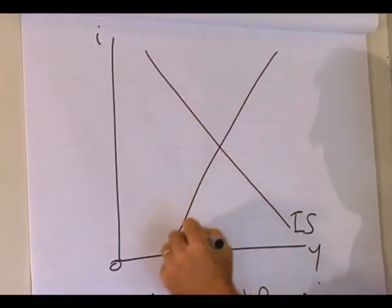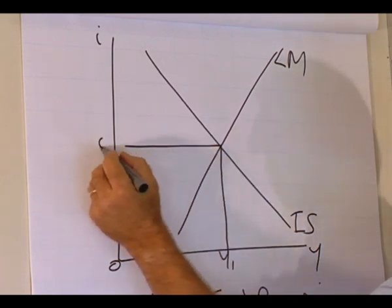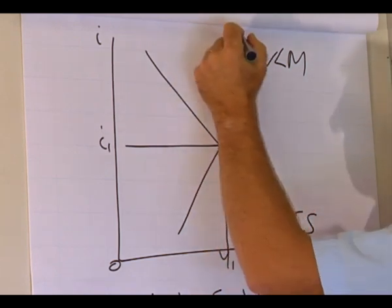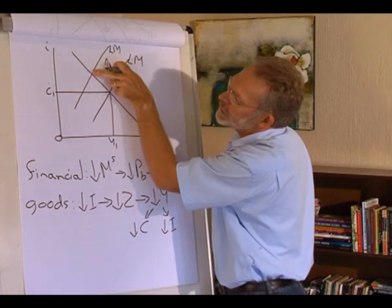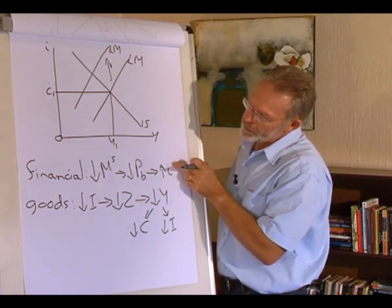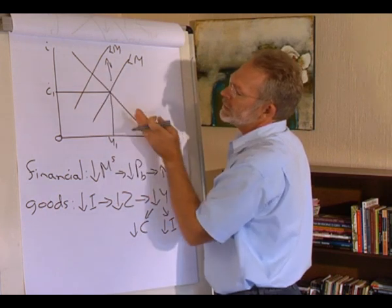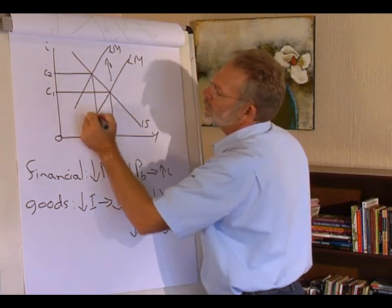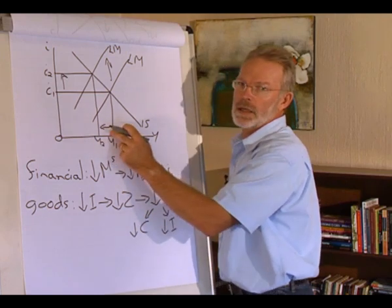In the IS-LM model, we start with equilibrium level of production Y1 and equilibrium interest rate i1. A decrease in the supply of money shifts the LM curve upwards. We move to a new equilibrium where the new LM curve intersects the IS curve. As the interest rate goes up, investment spending decreases and we move along the IS curve until equilibrium is re-established at interest rate i2 and production level Y2 — an increase in the interest rate and a decrease in the level of production.